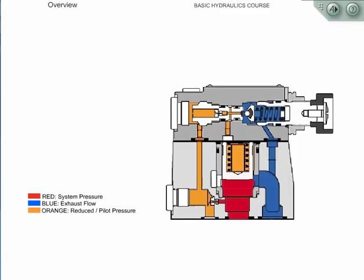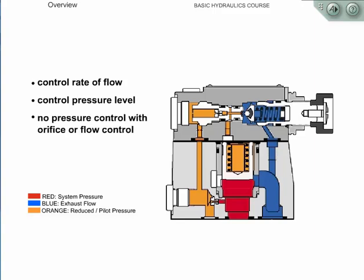The primary concern in fluid power circuits is to either control the rate of flow or the pressure level. One misconception has been that pressure may be controlled with an orifice or flow control device — this is never accomplished with any degree of accuracy. For accurate control of force, six types of pressure controls have been developed.